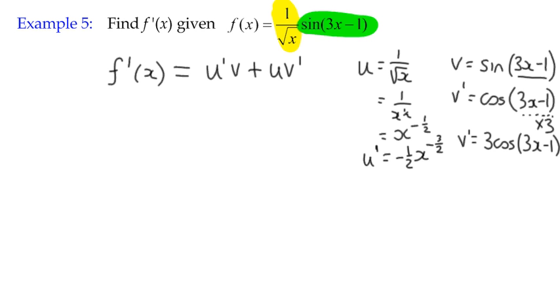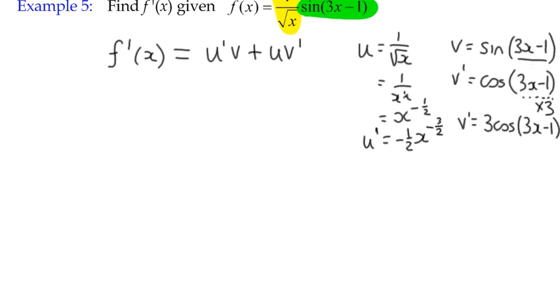So we can say that v dash or v prime is 3 cos 3x minus 1. The main mistake that gets made in this is that the 3 gets omitted and forget to actually do the derivative of the inside function. We've now got our two terms, u dash and v dash. So we can go back into using our product rule.